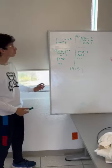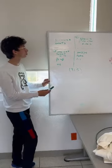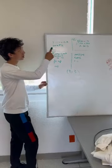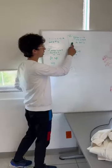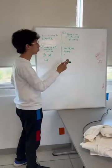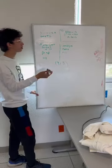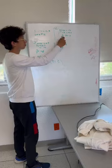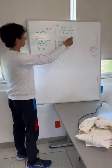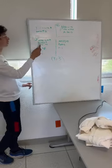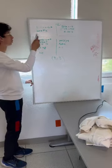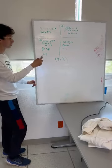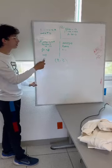For the substitution method, we should first select one equation, then get the value of y. For example, in this part it's 2x minus 5. Then we should substitute it in the other equation that we didn't choose — for example, in this part we get x minus 4.